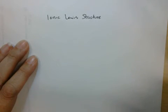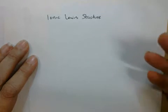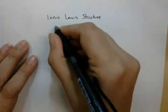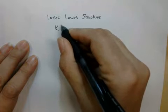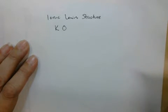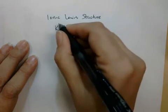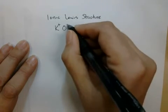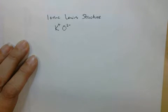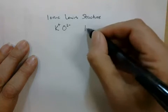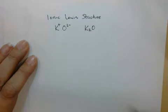I thought I would do a quick example of an ionic and a covalent Lewis dot structure. So let's do potassium oxide, which has potassium and oxygen in it. Potassium is always plus one and oxygen is always minus two, so I would need two potassiums to balance out the two negative charges — or I could just use the crisscross rule. That gives us the formula K₂O.